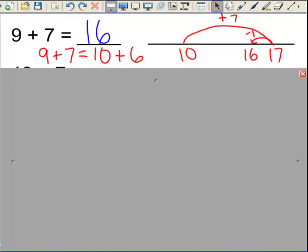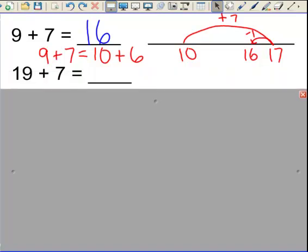This string continues with 19 plus 7, which is moving us into a two-digit example. And you can start to see the power of the open number line. No need to get fancy, no need to be perfectly proportional, and it's very easy to model any number of strategies.